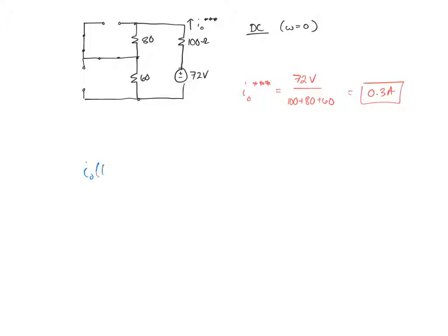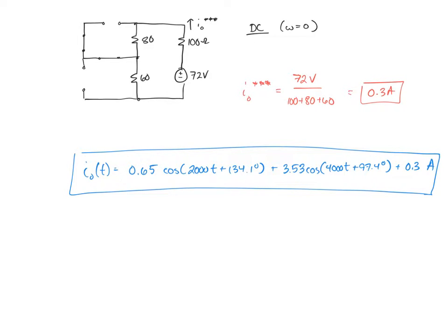And finally we can write the final solution for I₀, and this is in the time domain, so we take our three frequency domain equivalent circuits and convert them. In part one, the conversion of that solution in polar form to time domain would be 0.65 times cosine(2000t + 134.1°). That was in amperes. Part two, for the 4000 radians per second source, converting from polar to time domain, we get 3.53·cosine(4000t + 97.4°). And then finally, our DC solution was 0.3. All that's in amperes. And this is our solution. Note that since we had three unique frequencies, we expect three unique terms.